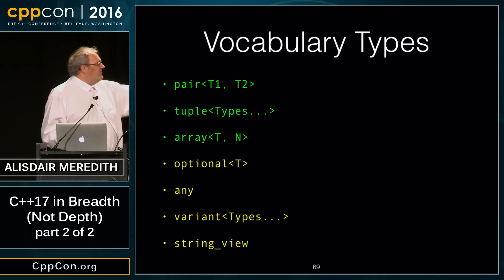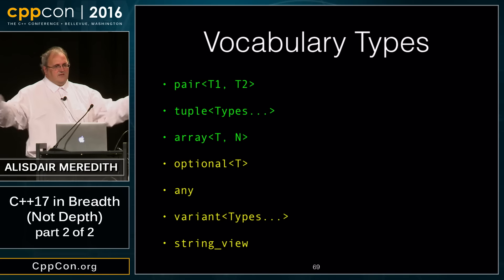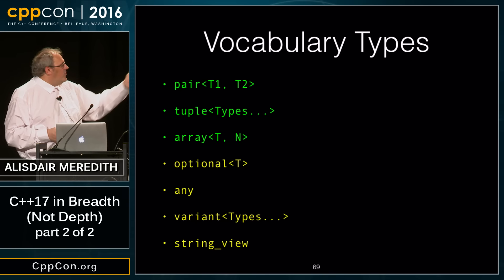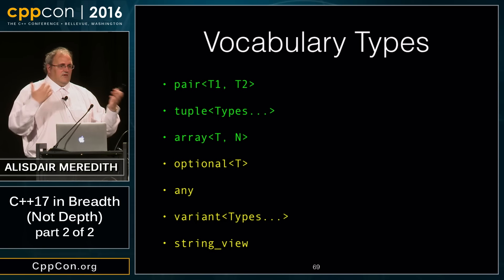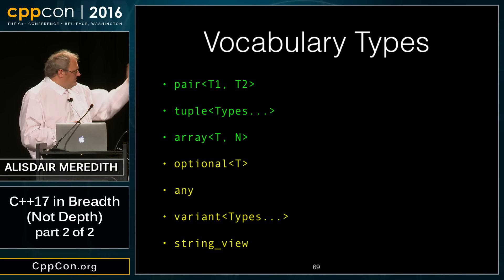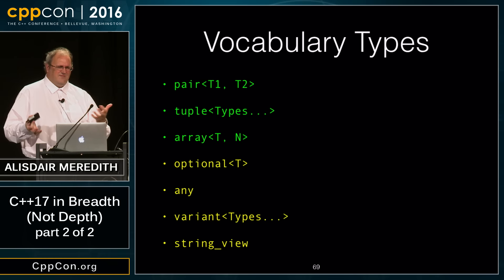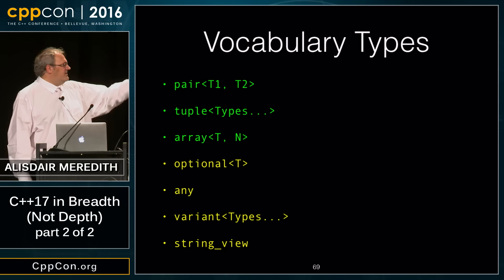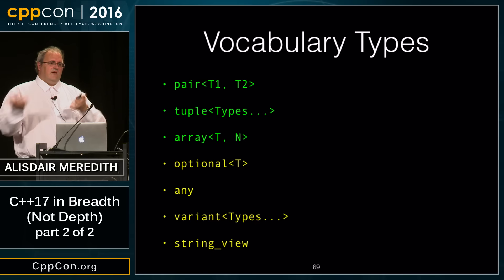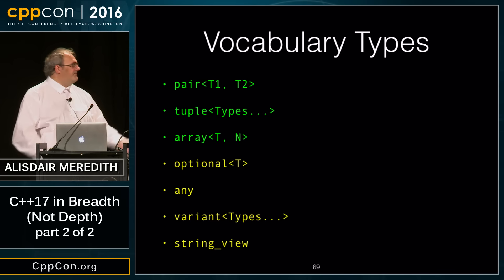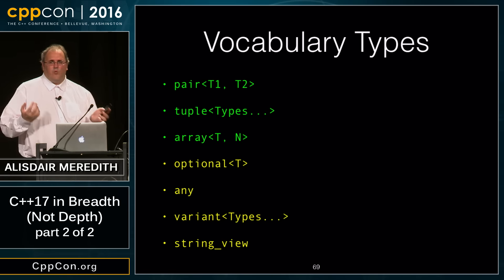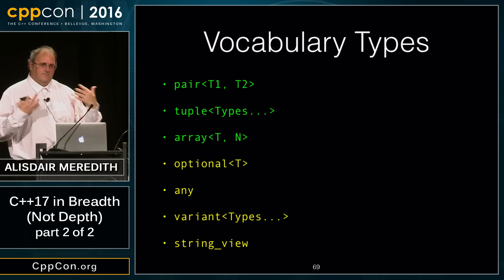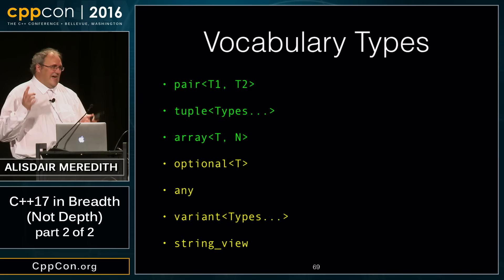We now have optional — a value that either exists or doesn't. This avoids the awkward pattern of using pointers to represent optionality, where ownership becomes unclear and lifetime management gets messy. std::optional is the primary vocabulary for a result that either produces something or doesn't. std::any is a container for one of anything — as long as the thing is copy constructible, any can hold it, though it's not a template.